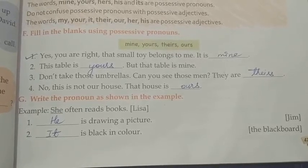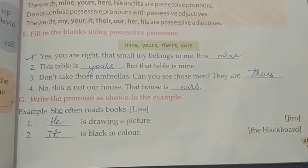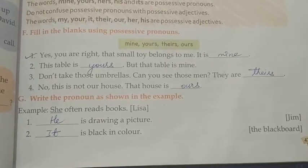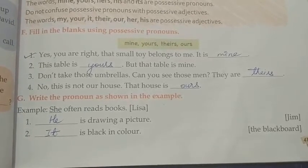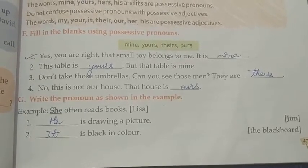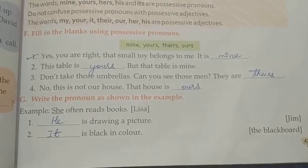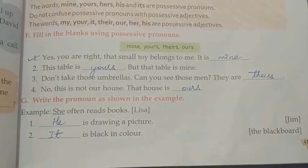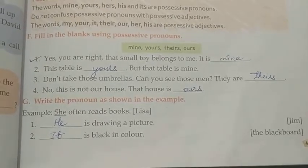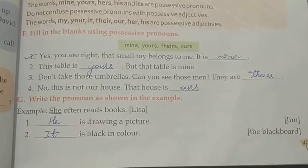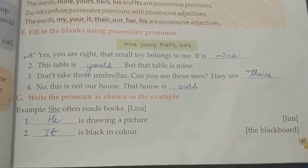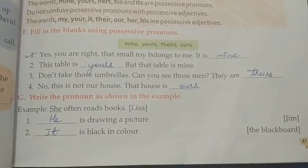Number four: No, this is not our house. That house is ours. Ours means humara — belonging to us. Now let's move to Exercise G.